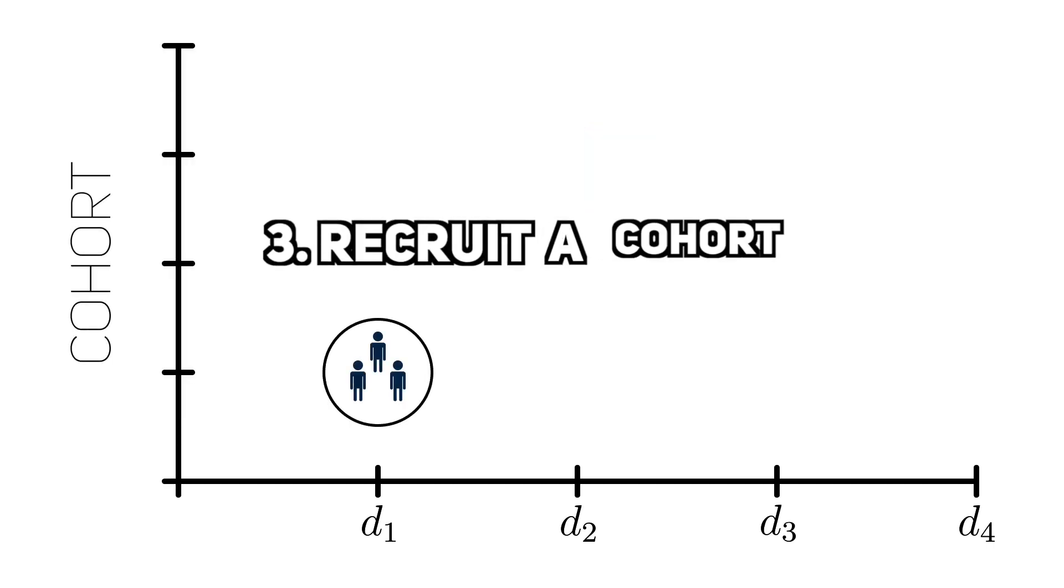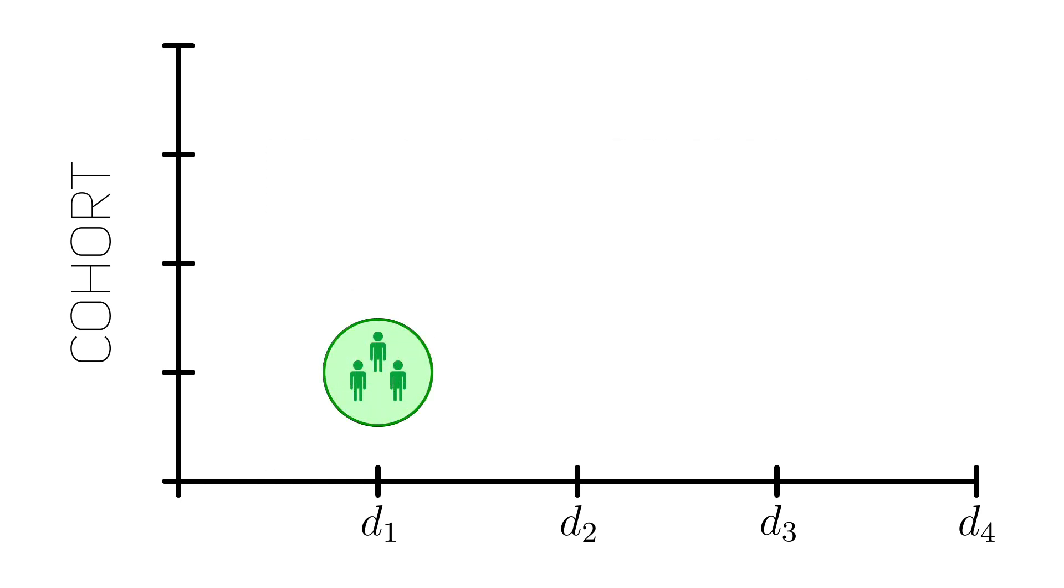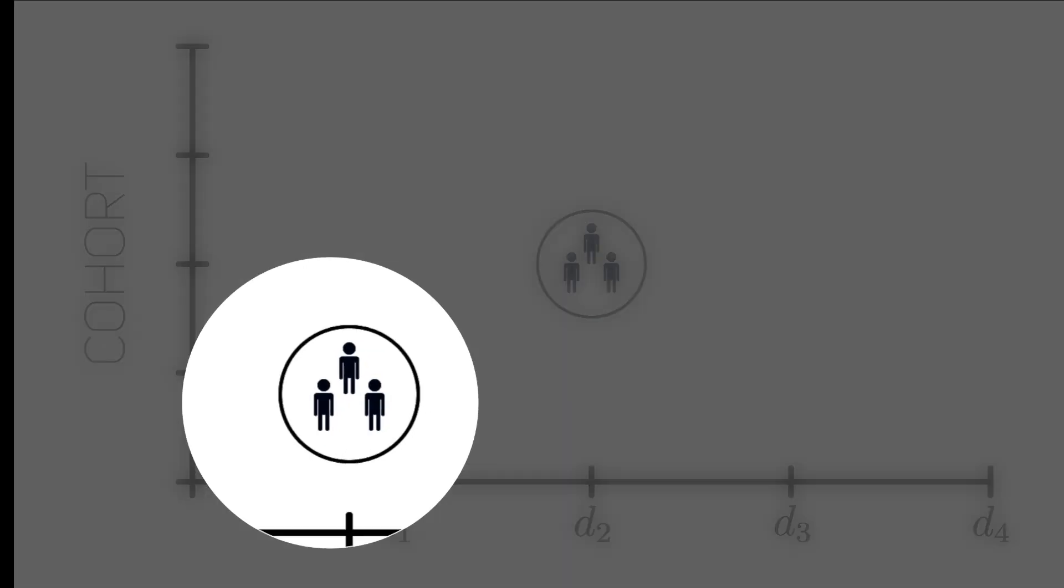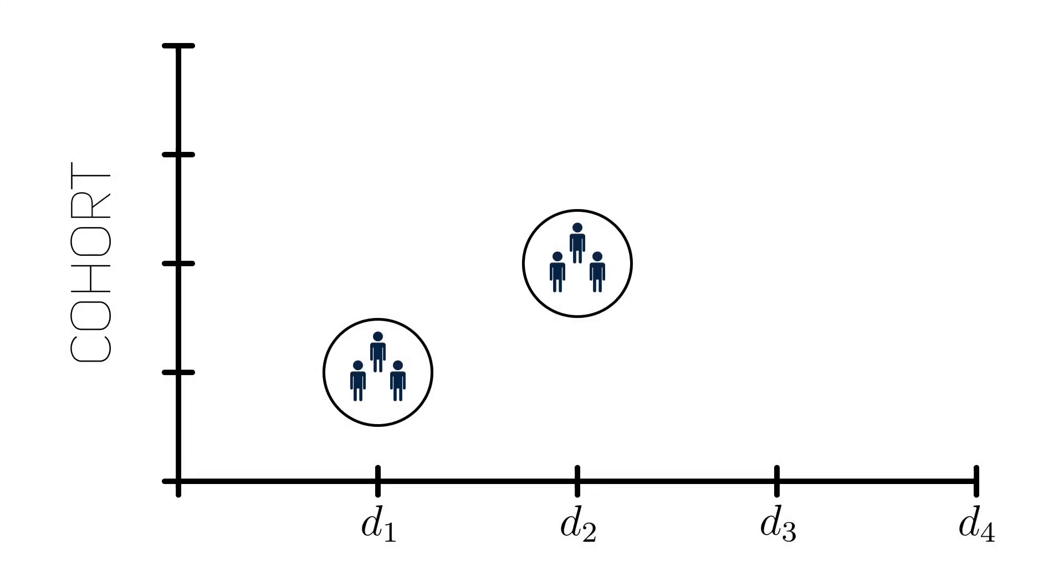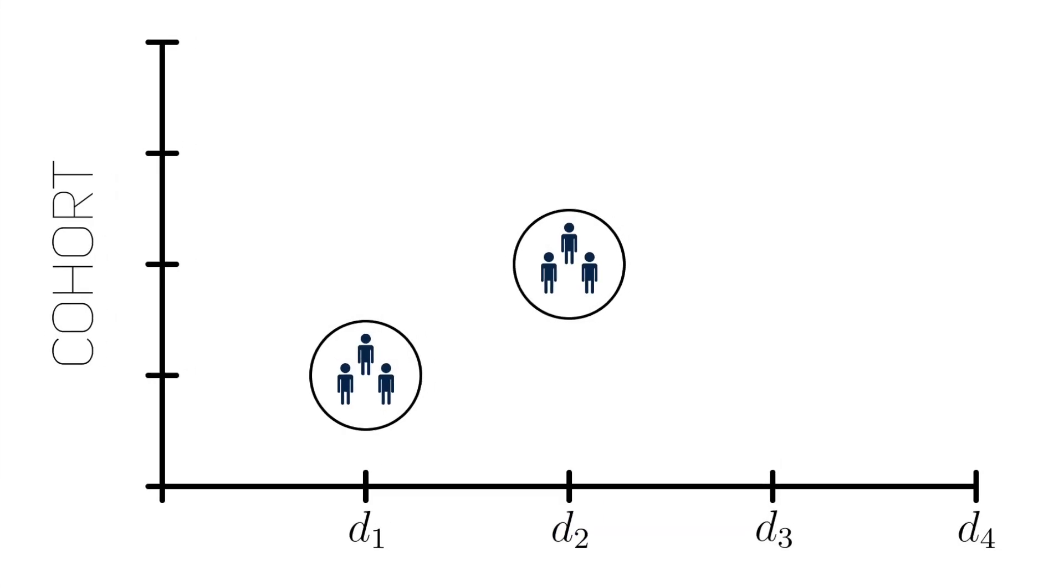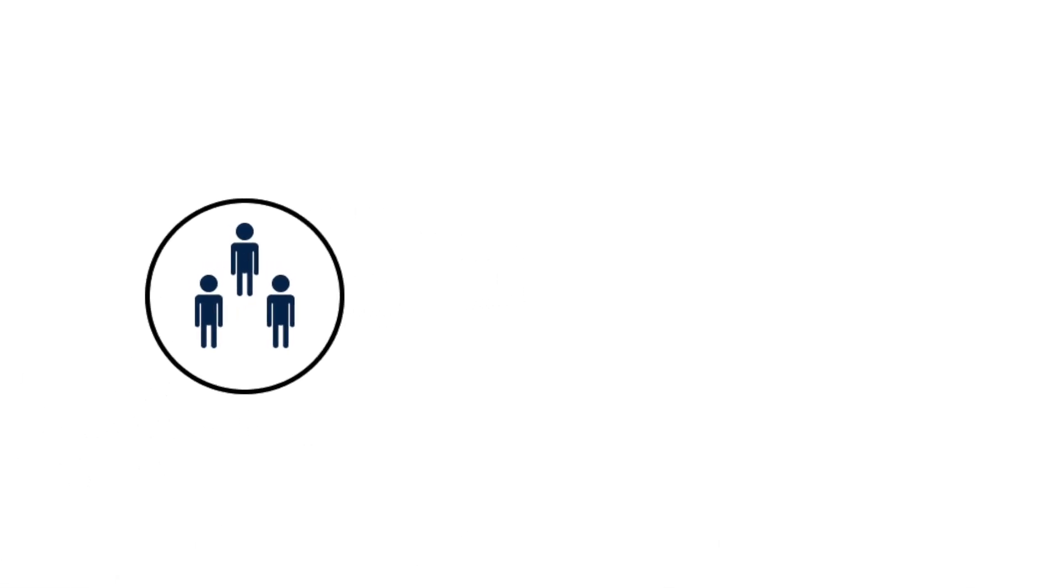Then, we recruit 3 people into a cohort and they take the first dose. If no one gets a toxicity, then we progress to the next dose and recruit a new cohort of 3 people. No toxicities means the next cohort gets a higher dose. Different things can happen when toxicities occur.